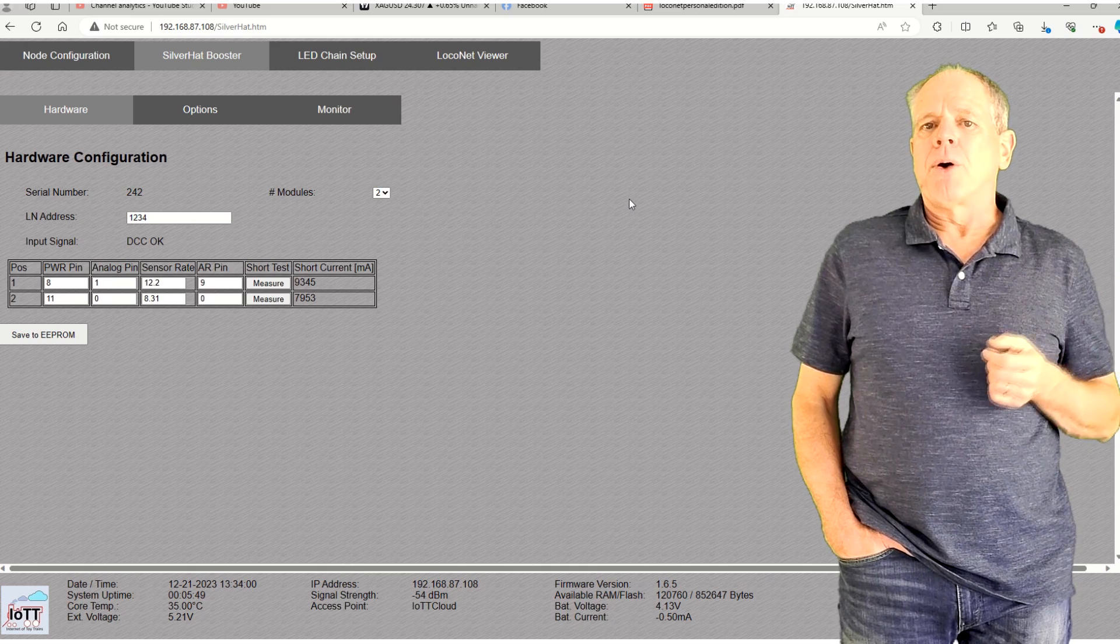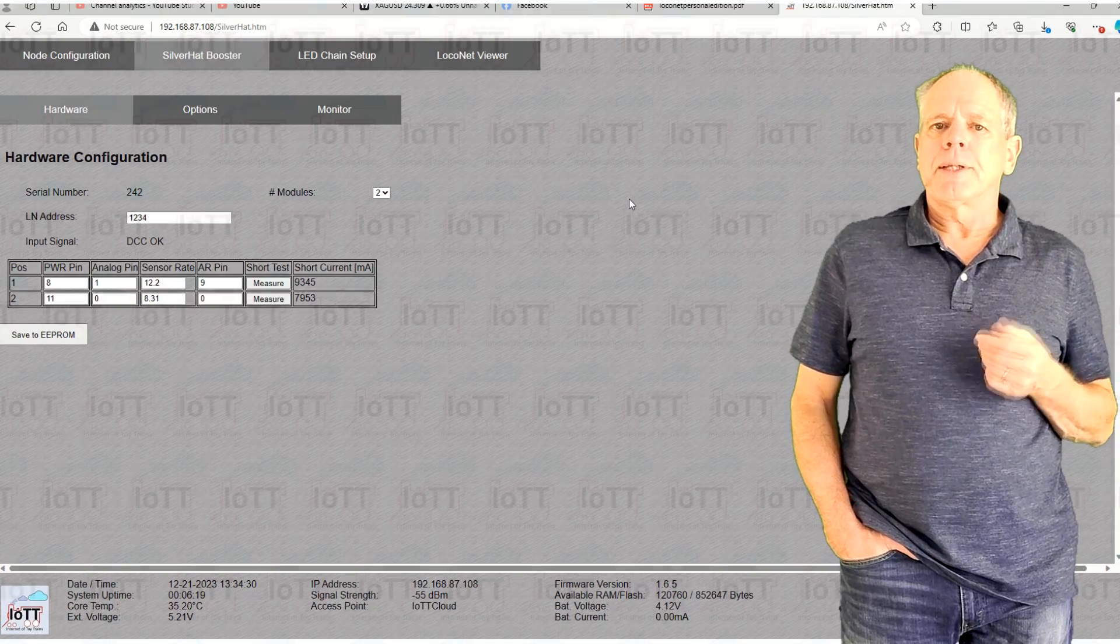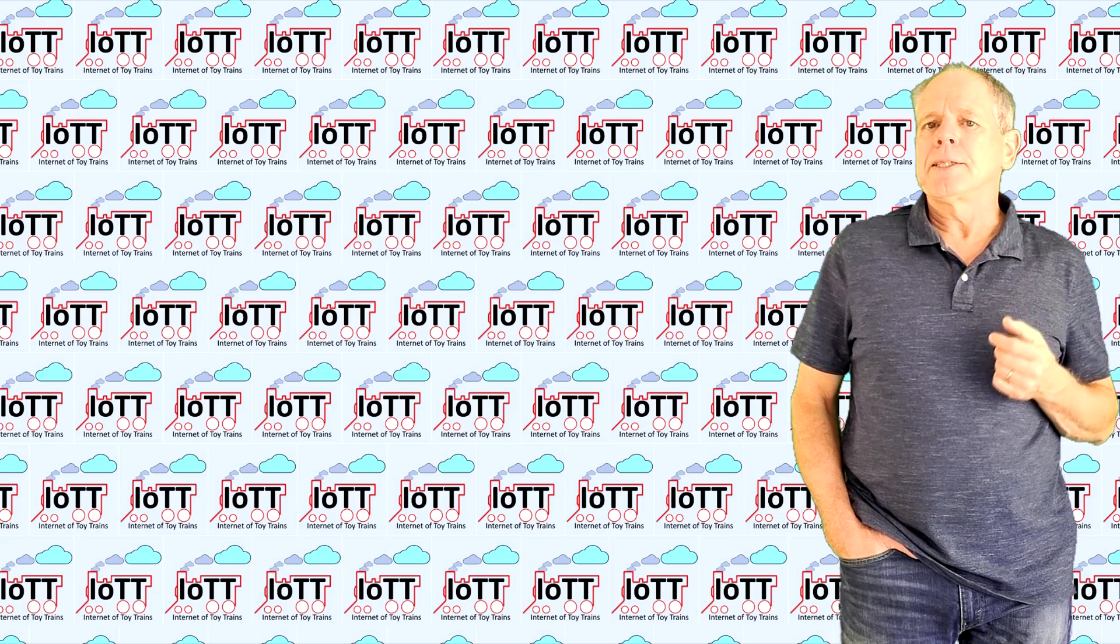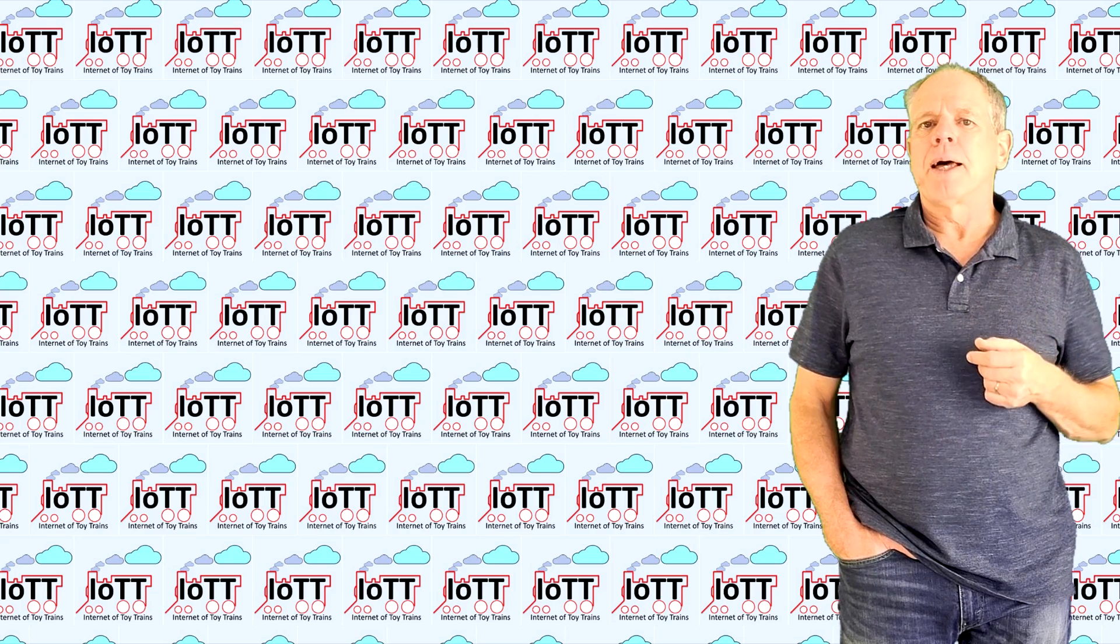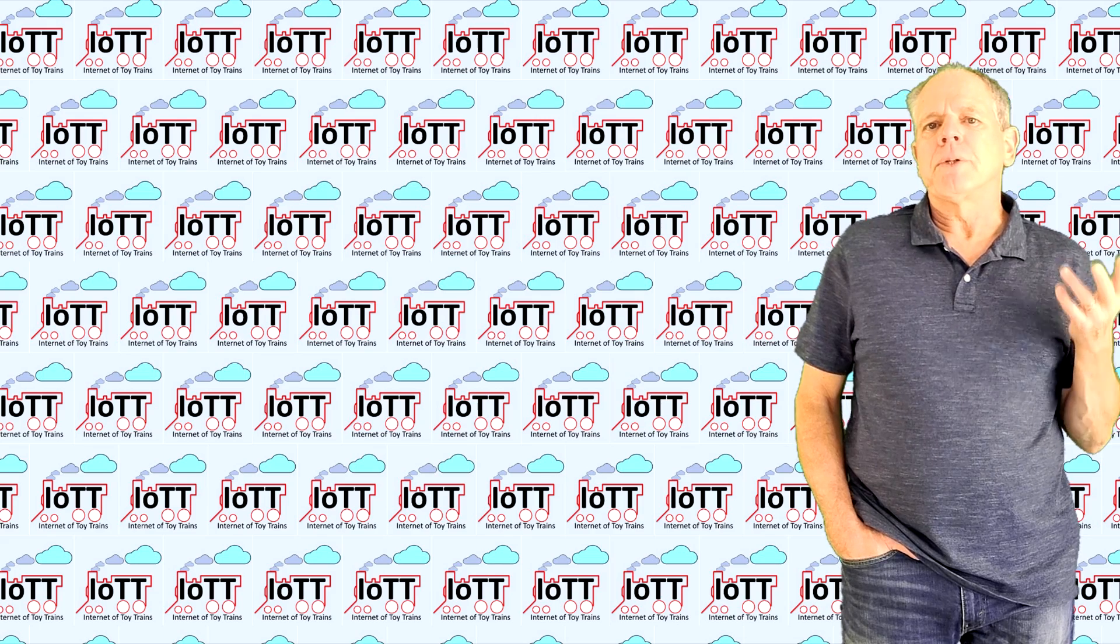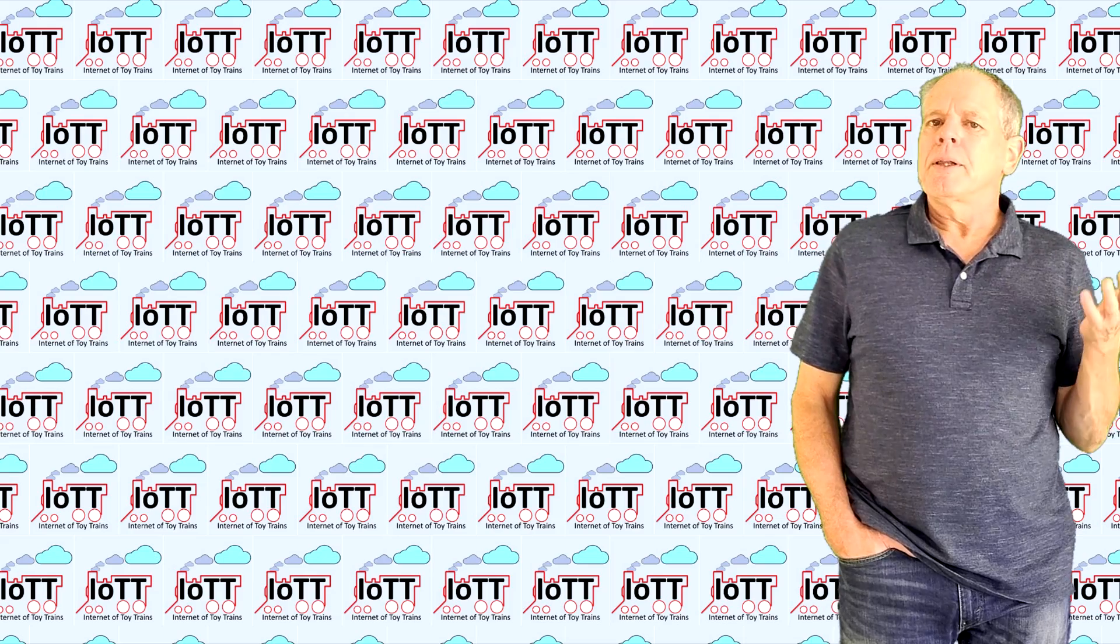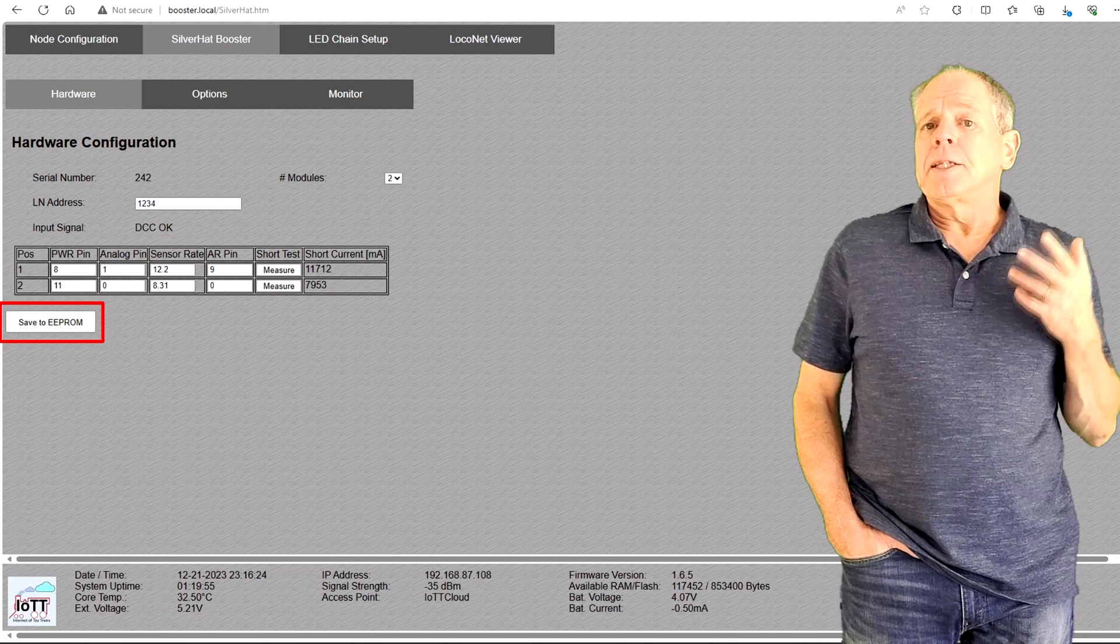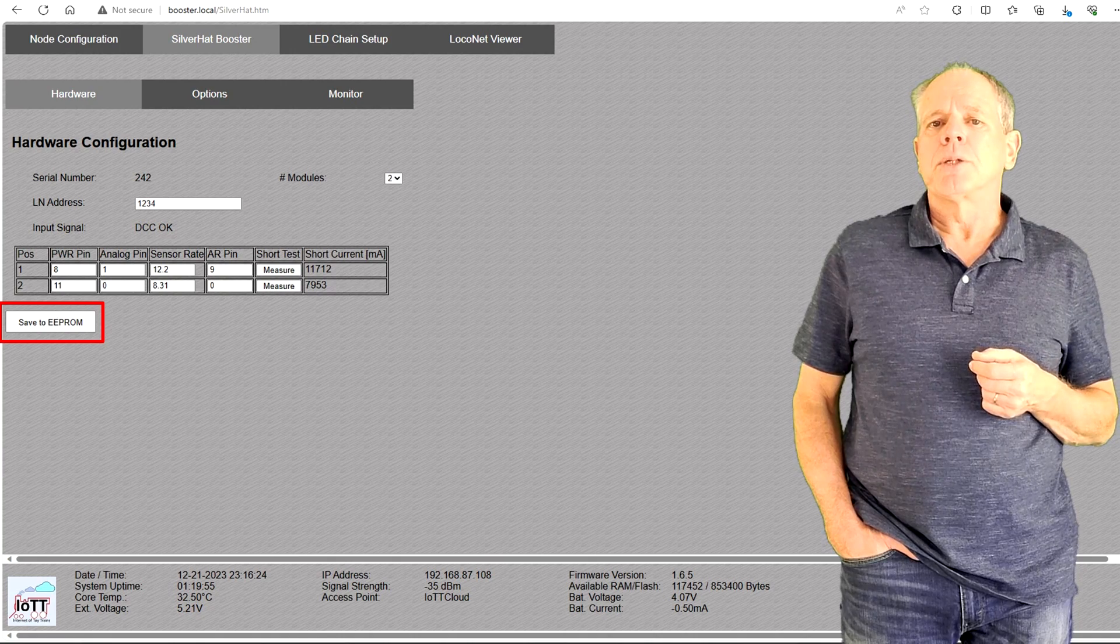Click OK to start the process. The booster will now switch track power on for about 500 microseconds and then measure the booster current and display it. It is, by the way, a good idea to repeat this test once in a while, particularly after making changes to the layout or the power supply. Knowing the short circuit current is important to determine what current the booster can supply during regular operations. This nominal current will be set in the Options tab. But before we do that, it is best to click the Save to EEPROM button and save the settings in the non-volatile booster memory.